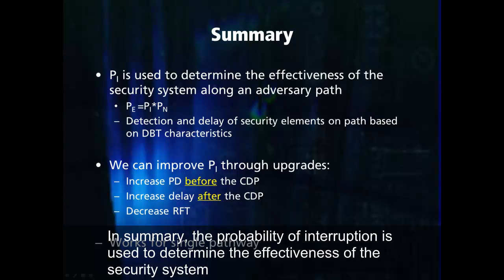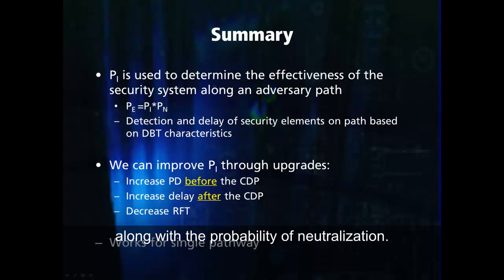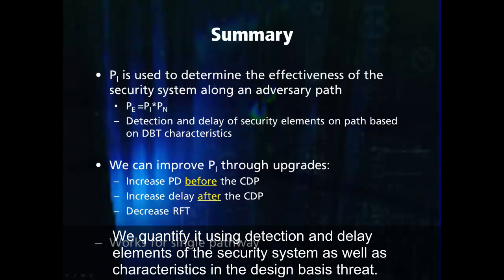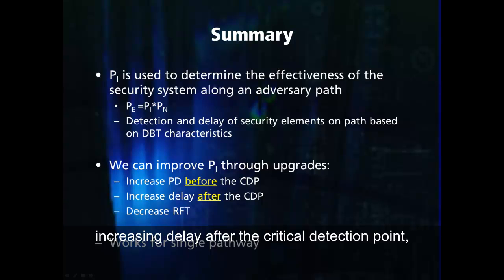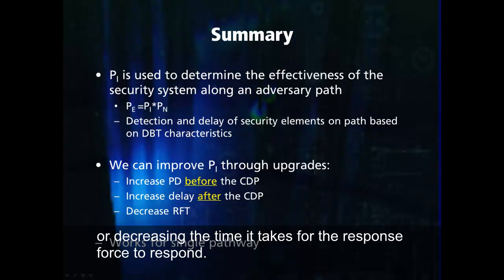In summary, the probability of interruption is used to determine the effectiveness of the security system along with the probability of neutralization. We quantify it using detection and delay elements of the security system as well as characteristics in the design basis threat. The probability of interruption can be improved in a number of ways: by adding or improving detection before the critical detection point, increasing delay after the critical detection point, or decreasing the time it takes for the response force to respond.